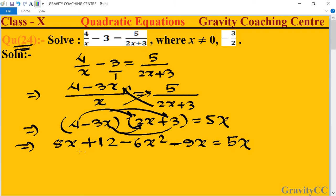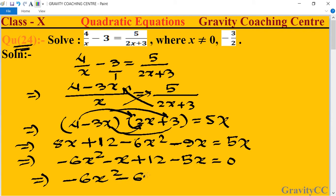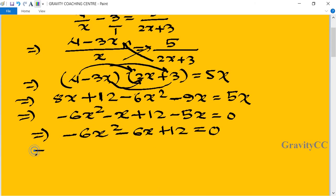Simplifying: 8x - 9x gives -x, so we have -6x² - x + 12 = 5x. This implies -6x² - x + 12 - 5x = 0, which gives us -6x² - 6x + 12 = 0.